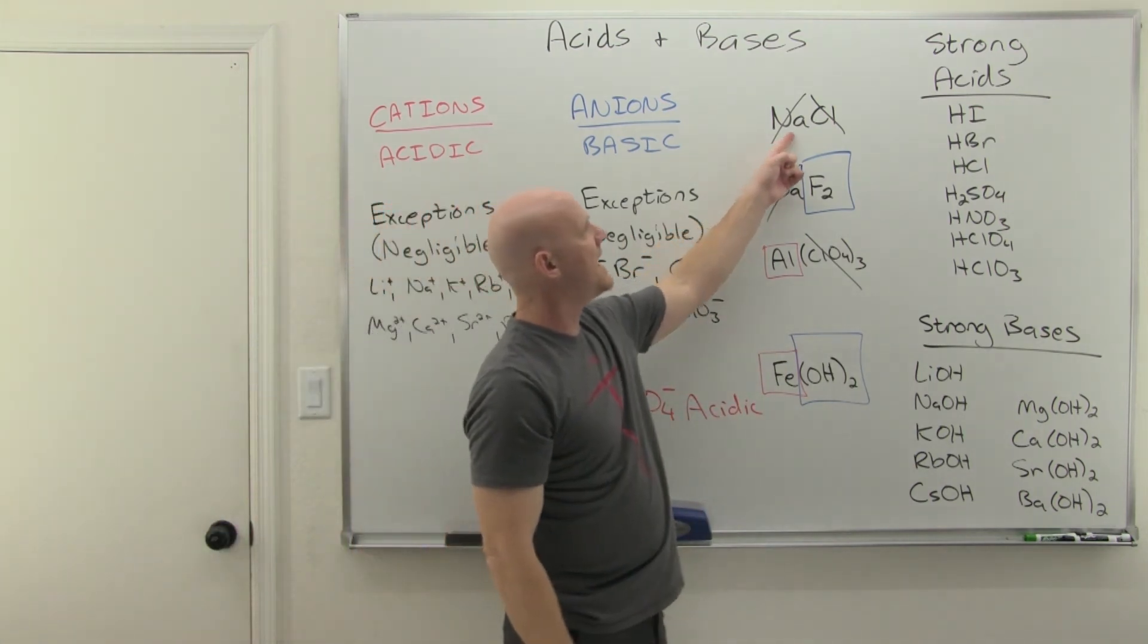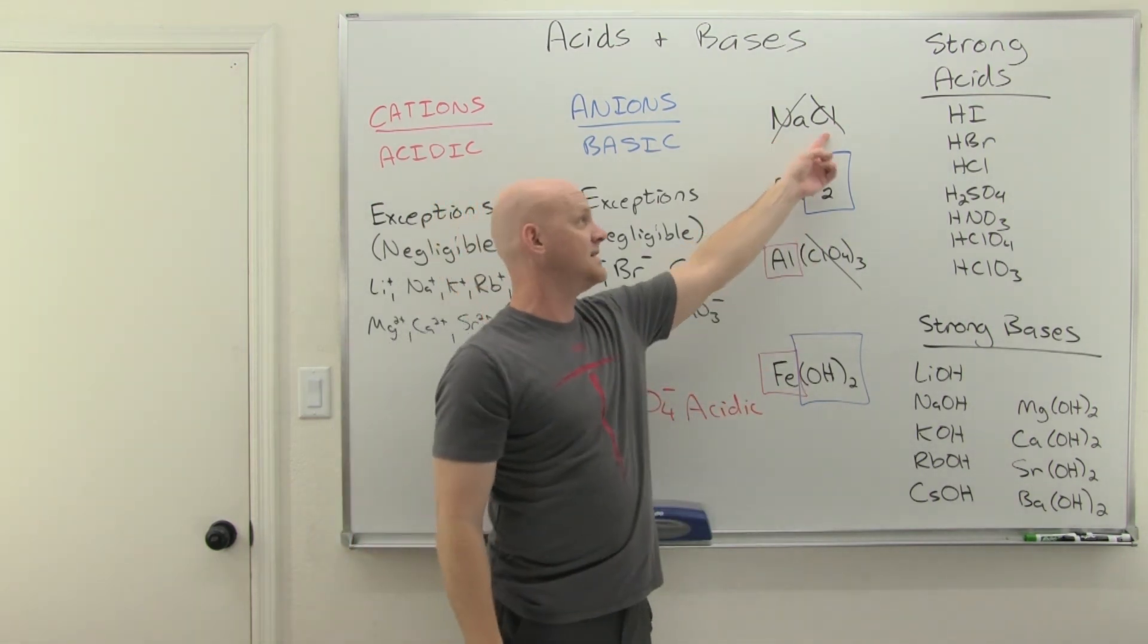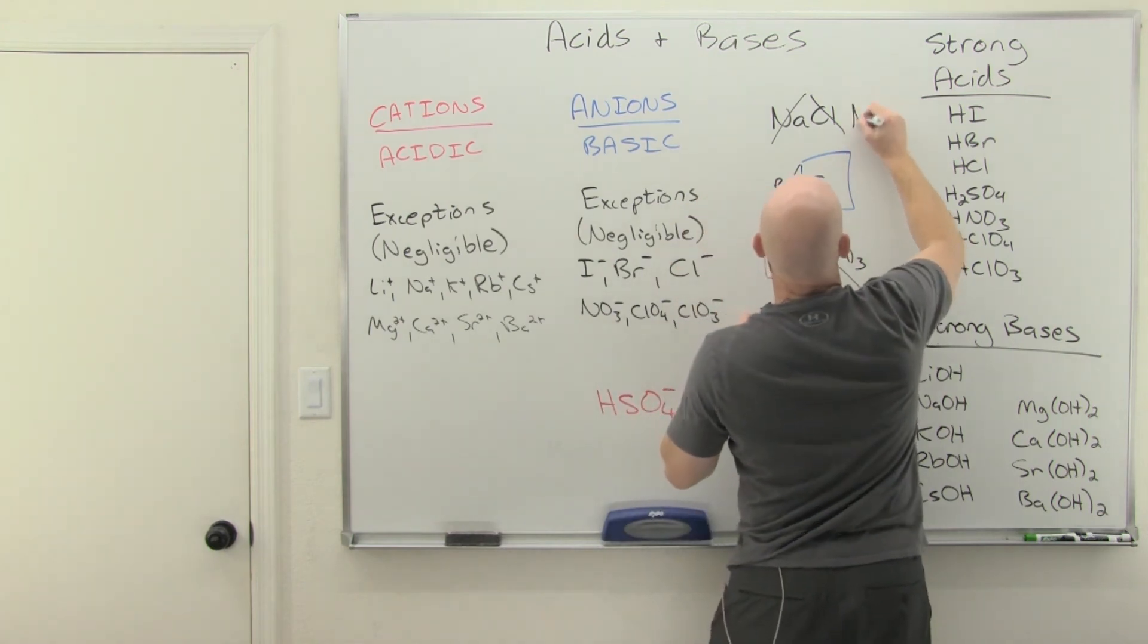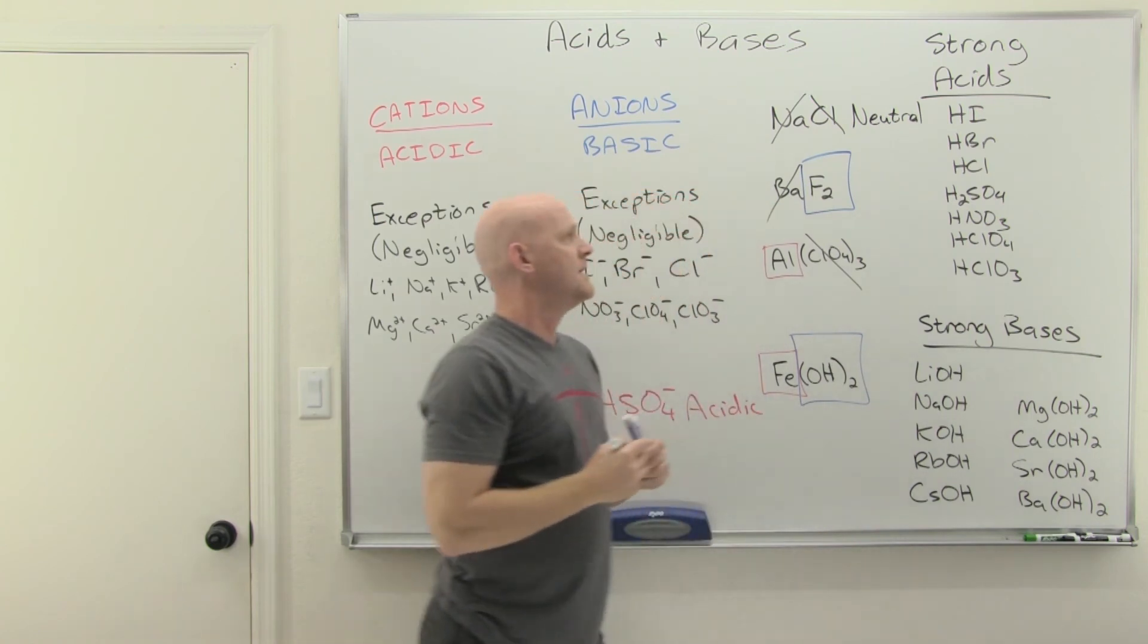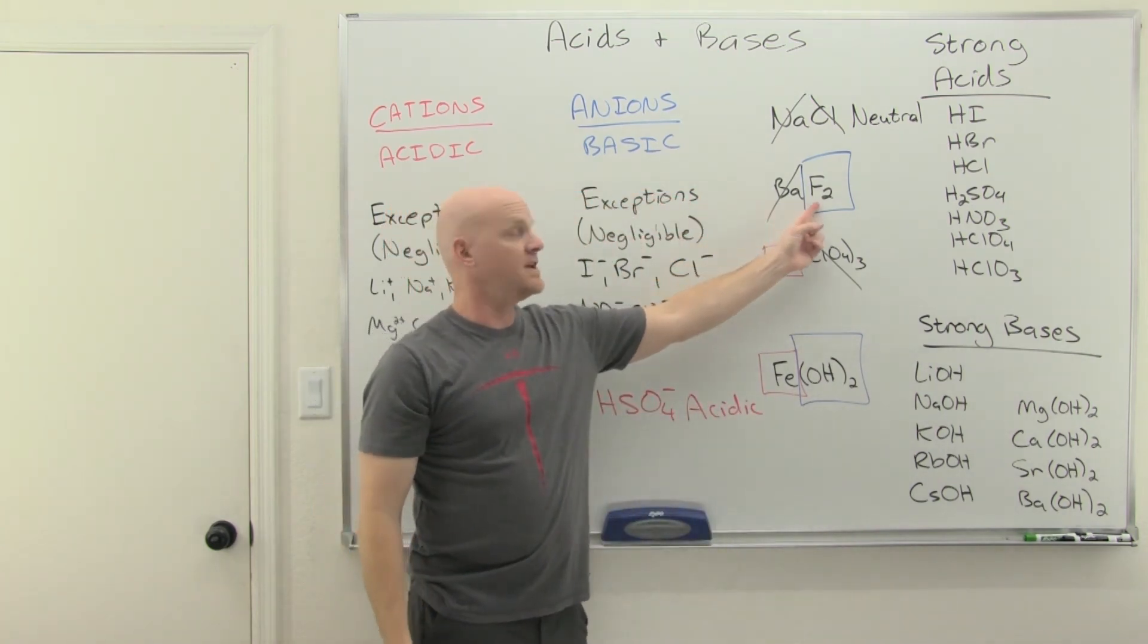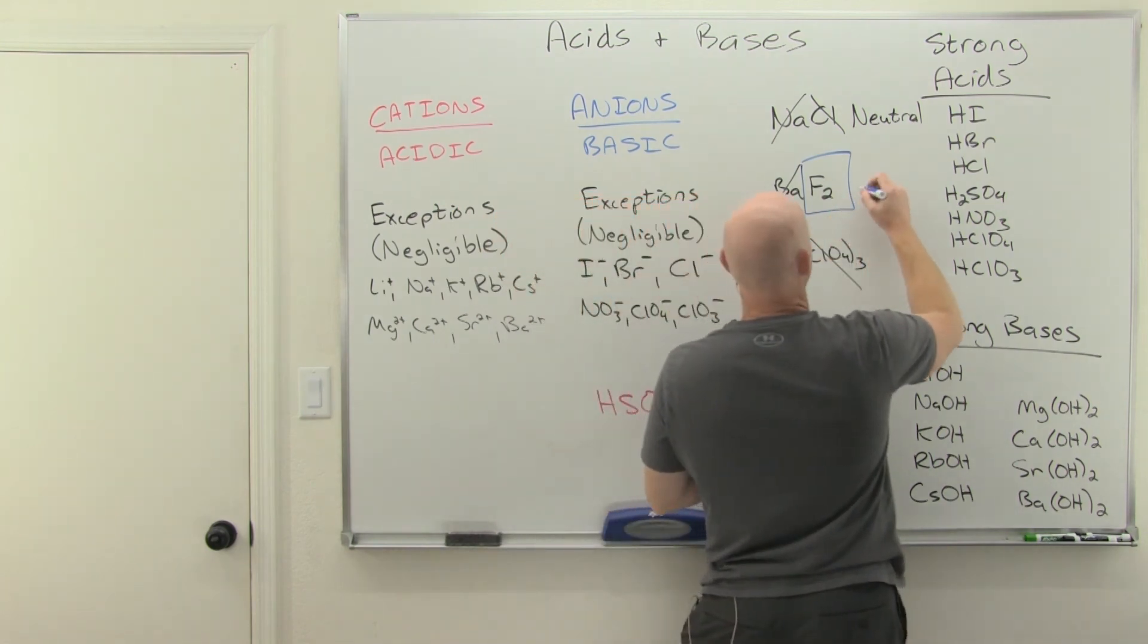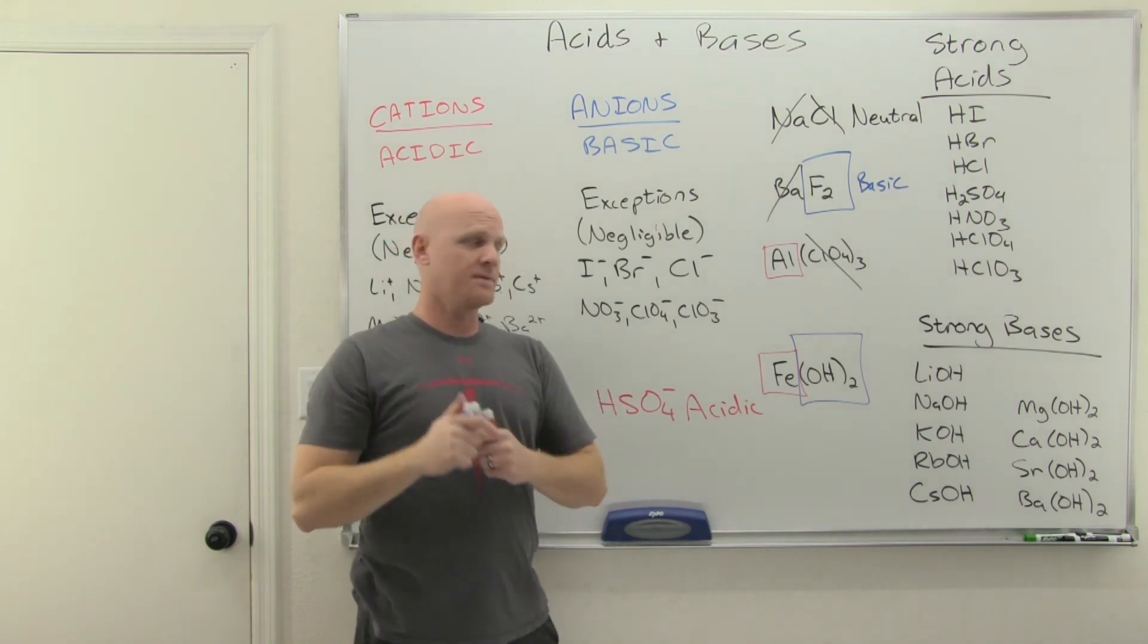If you crossed out both your cation and your anion, if they're both negligible, he's not an acid and he's not a base, well, then you have a neutral salt. It's not an acidic solution, it's not a basic solution, it's a neutral salt. If you crossed off your cation but not your anion, you have a basic anion. Then overall, that is a basic salt. When you dissolve it in water, it's going to give a basic solution that would turn litmus paper blue.